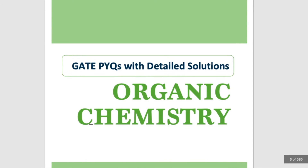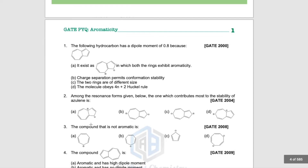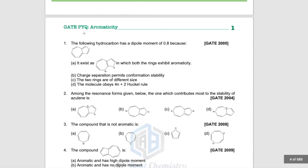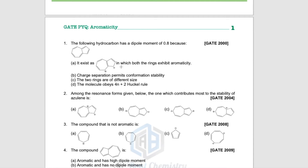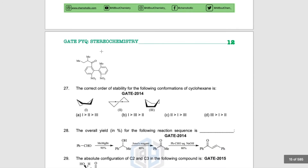We have also included color codes for different sections. For example, the organic chemistry portion is green in color. On the header part of all the organic chemistry pages, it will mention 'GATE PYQ' and the chapter name. So if you are on a particular chapter, you will easily be able to see that the questions belong to that particular topic.